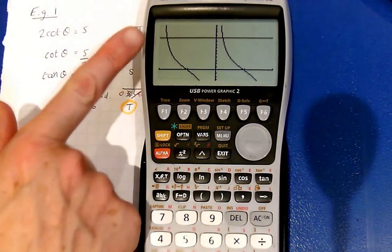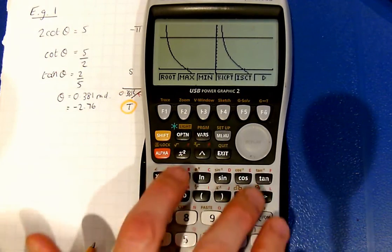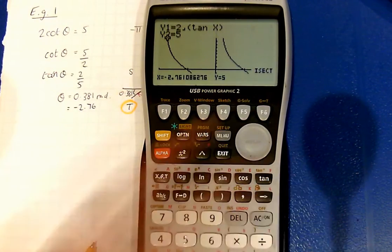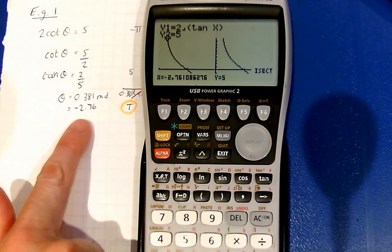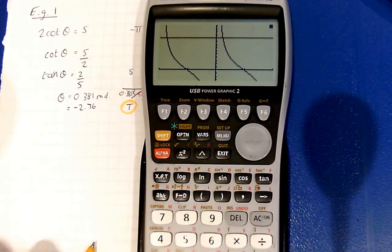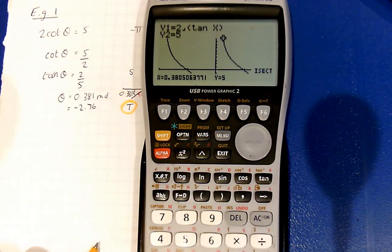So now we can see that the graphs intersect. So I'm going to use G-solve and intersect. And we're told that the first answer is negative 2.76, which is super. And we press the arrow to get the next one is 0.381.